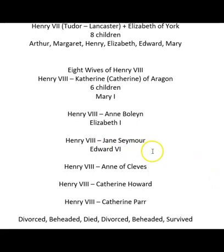Edward became king but was not old enough to rule on his own, so members of his family — I believe his uncle — had to rule until he was old enough. When he was 18 and just about to rule on his own, he suddenly died. Again, we're not really sure how he died. There are a number of possibilities.